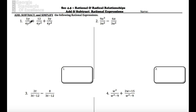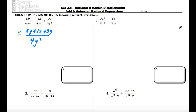We have 5y over 4y squared, plus 12 over 4y squared, plus 3y over 4y squared. Notice how all the denominators are the same — the common denominator is 4y squared — so it's just a matter of combining like terms. We have 5y plus 12 plus 3y, and we see two common terms, so we're going to combine those and make 8y.